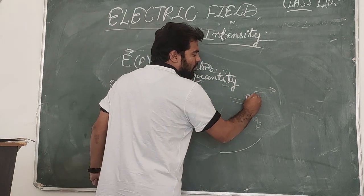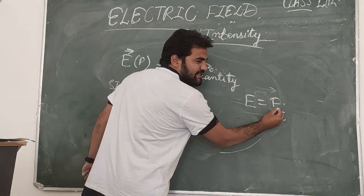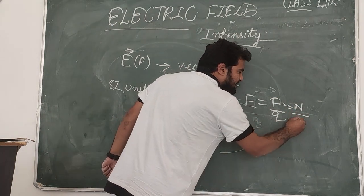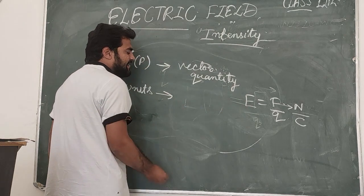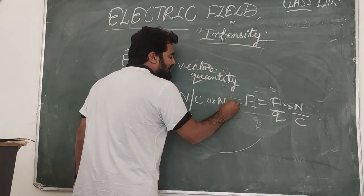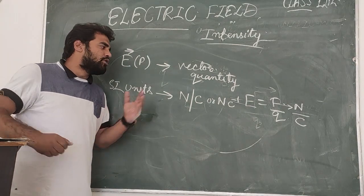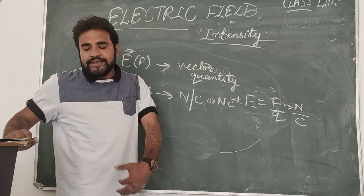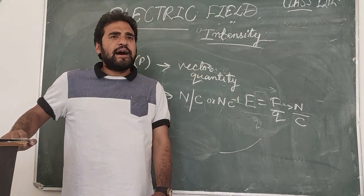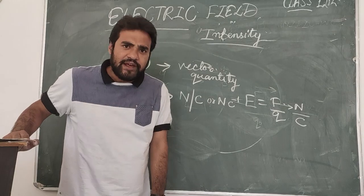Electric field intensity is equal to the force experienced by a unit positive charge. The unit of force is Newton and the unit of charge is Coulomb, so electric field intensity is measured in Newton per Coulomb, or N C⁻¹. That was all about electric field intensity. The next topic — electric field intensity due to a point charge — will be discussed in the next lecture. Thank you very much.